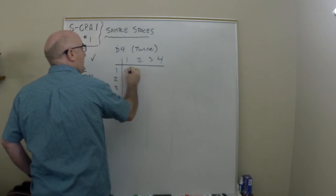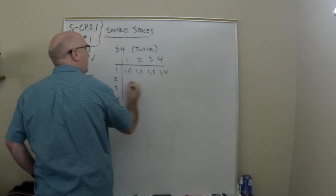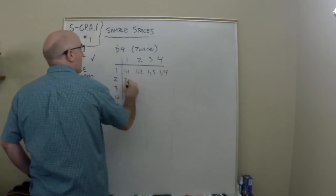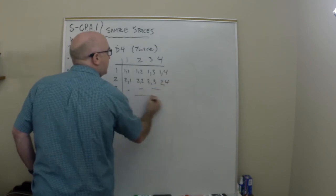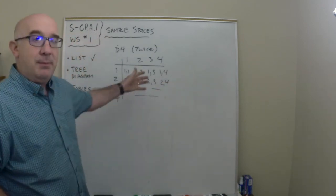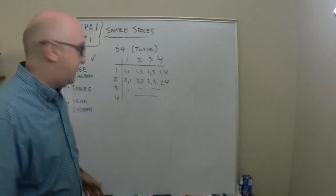You could, when you roll it twice, let's roll it twice, you could get a 1-1, you could get a 1-2, a 1-3, a 1-4, you could get a 2-1, 2-2, 2-3, 2-4, and so on and so on. And these become your sample space of what could have happened. And it's a nice way to organize it.